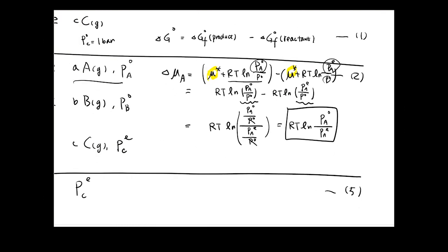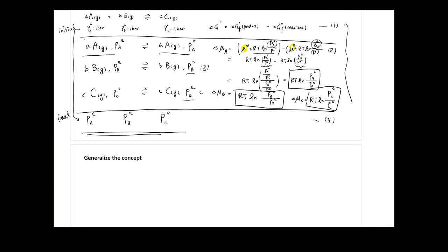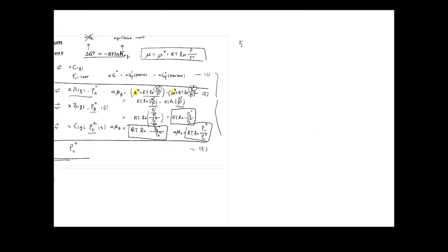With that in mind, you can write out Δμ_B and Δμ_C. Δμ_B = RT ln(Pb°/Pb_eq), and Δμ_C = RT ln(Pc_eq/Pc°). To get to your final state, you just add up equations two, three, and four — then you reach Pa_eq + Pb_eq = Pc_eq. Equation five is simply equal to the sum of equations one, two, three, and four. In equation one, what you have is ΔG°.